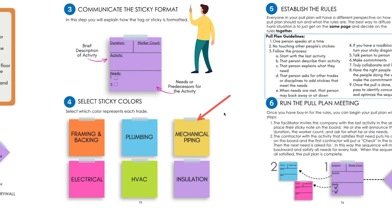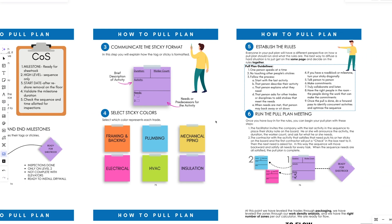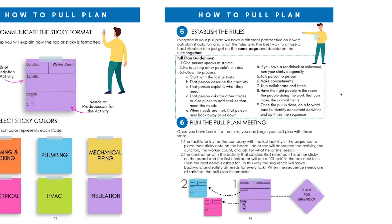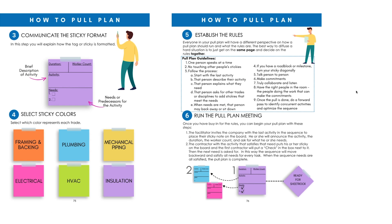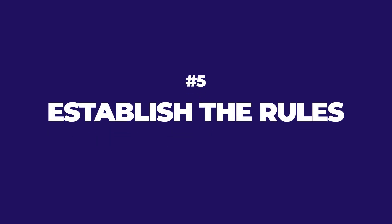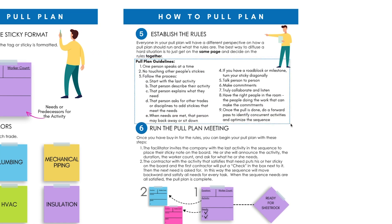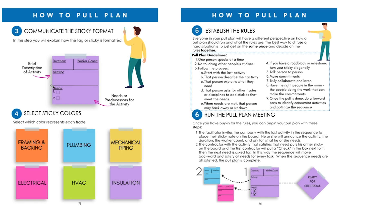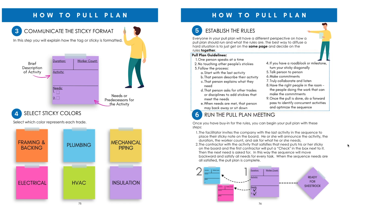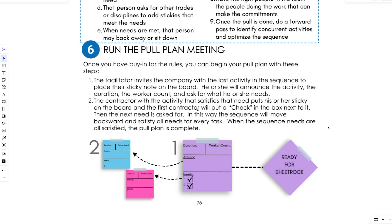Make sure every trade knows what color they are for their tags and stickies so they can get started. Then establish the rules together — everybody has a tinge of nervousness doing their first pull plan, and pull plans can be tough. Common rules include: one person speaks at a time, no touching other people's stickies. Coming up with collective guidelines makes the pull plan fairly stress-free.